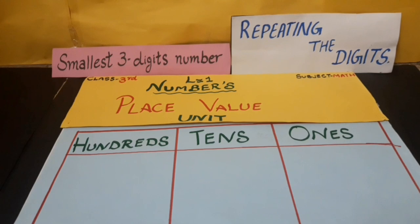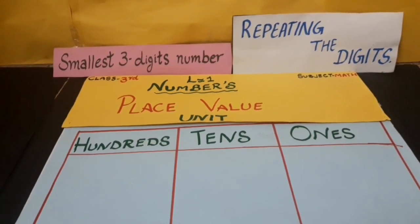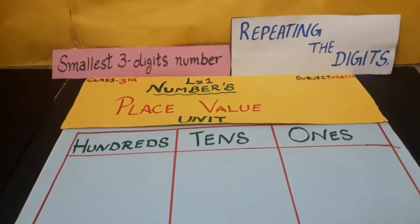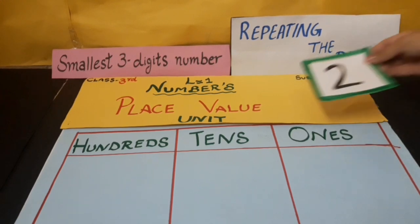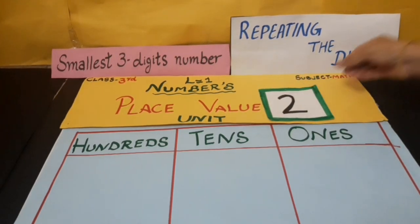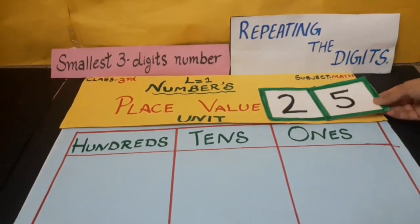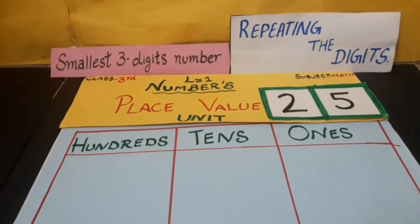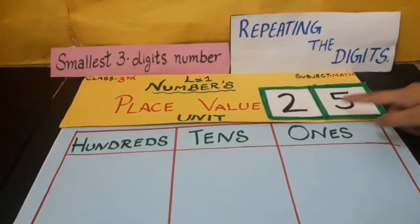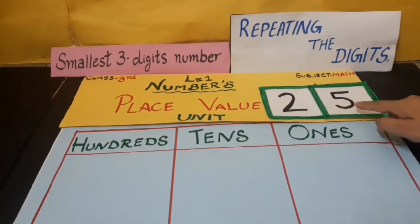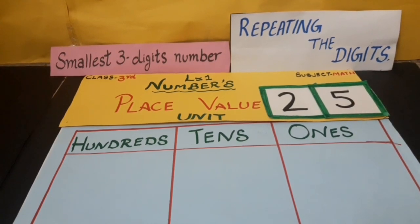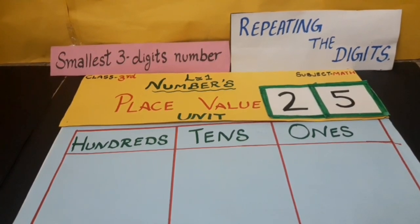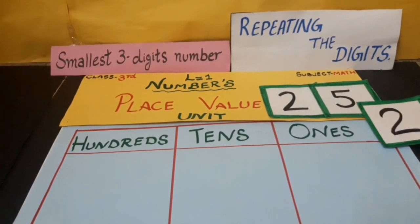Our fourth question is: make the smallest 3-digit number by repeating the digits. The digits are 2 and 5. In the smallest number, the smallest digit will be repeated. Which one is the smaller? It's 2. So we will repeat 2 here.